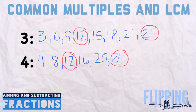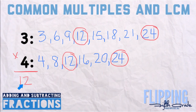The easiest way to get a common multiple is by multiplying the two numbers together — 3 times 4 gives us 12. But that's not always the easiest way to get the least common multiple. Looking at these two lists, we have 12 and 24 as common multiples, so the least common multiple is 12. It doesn't always work out that way, so if you want to find the LCM, you must write out the multiples and look them over carefully.